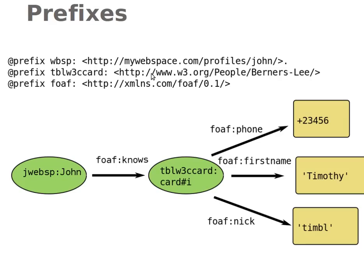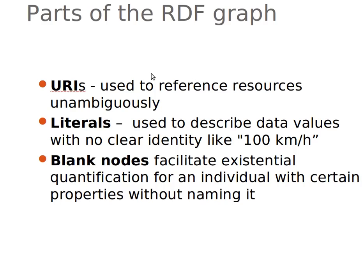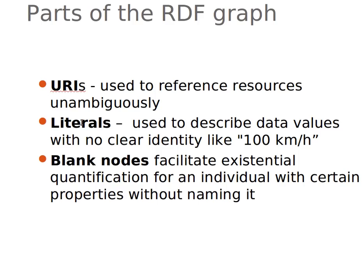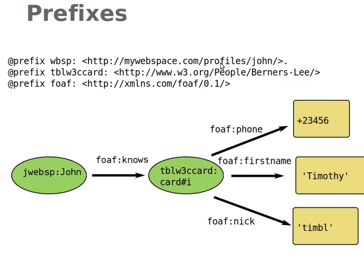Because any RDF dataset is usually a graph, part of that graph are the URIs, which are generally used to reference resources unambiguously. These must be unambiguous — we must distinguish between terms from different namespaces, because if we use the same word from two different namespaces we need to know where they come from to understand the context.